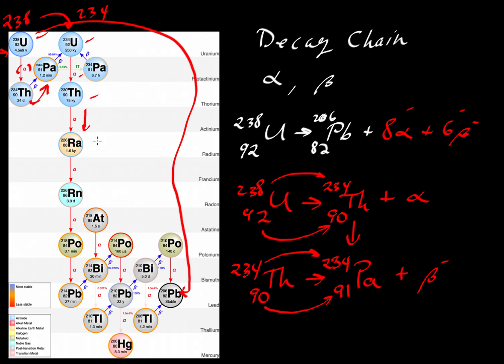Another alpha decay will turn that thorium into radium. Another alpha decay will turn into radon, which is a very important noble gas in terms of environmental concerns about sources of radioactive contaminated air that can lead to issues of lung cancer.